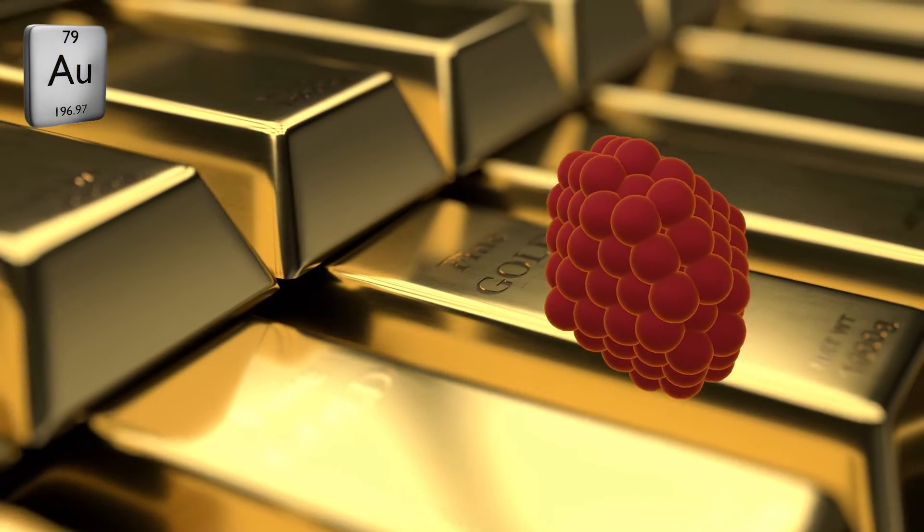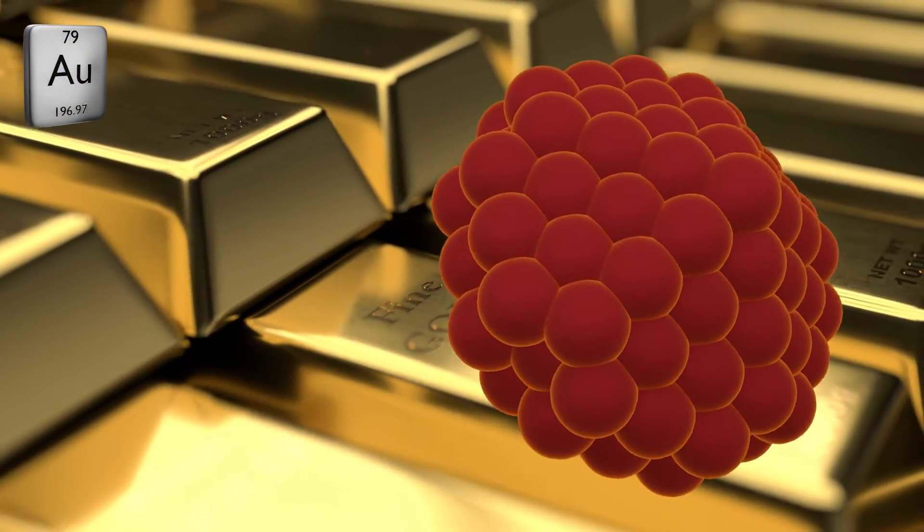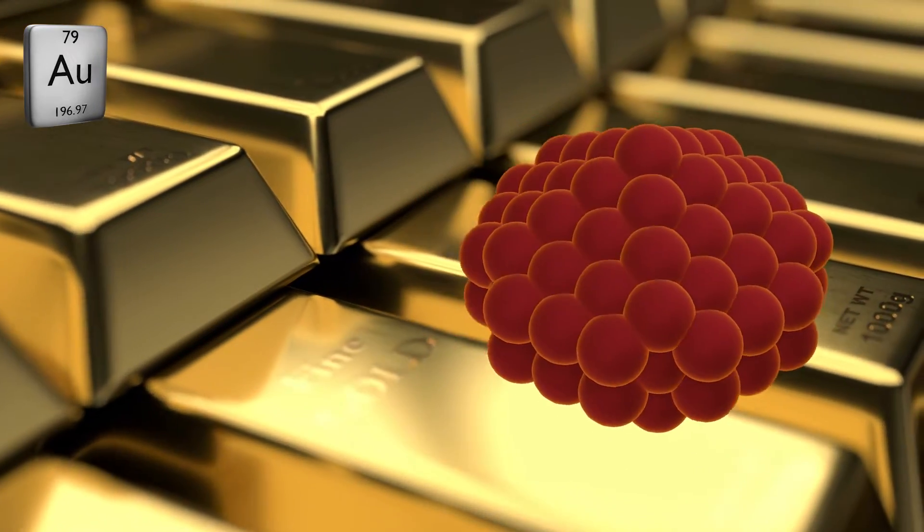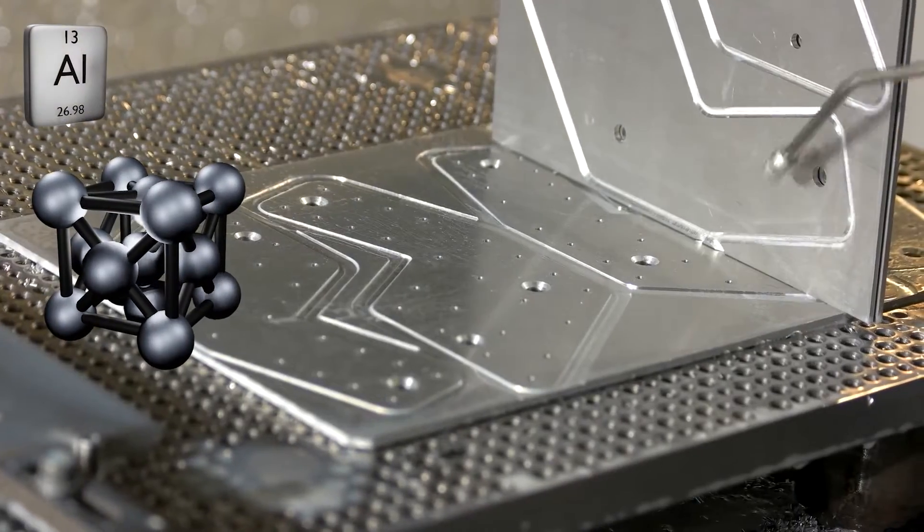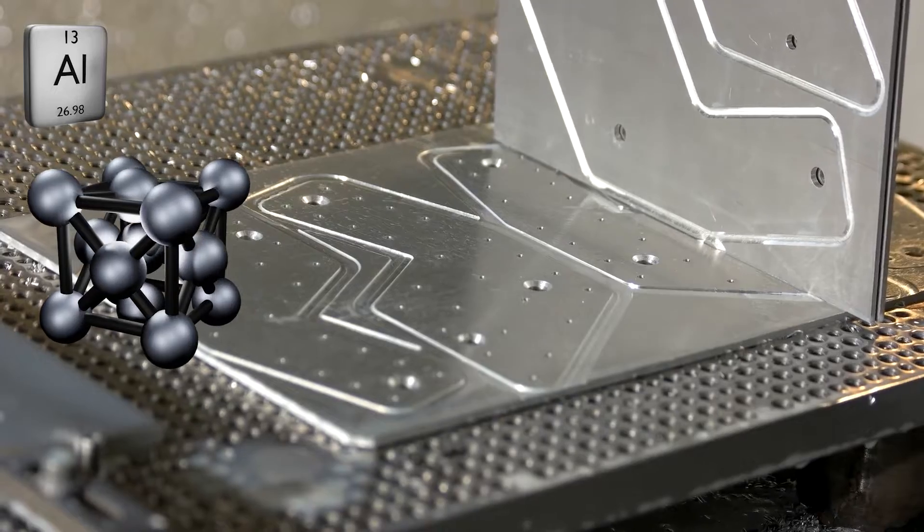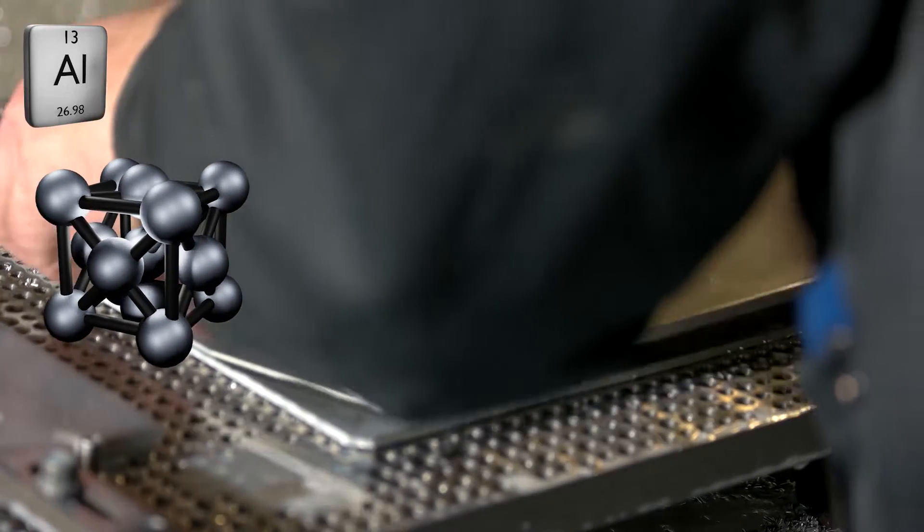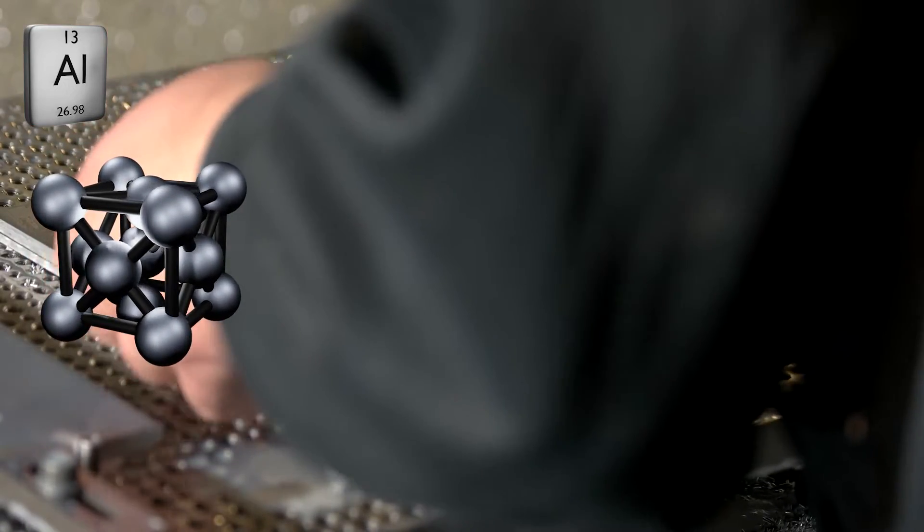For instance, the atoms that make up a gold bar are identical to the atoms that make up a gold nanoparticle. In our everyday lives, we're used to objects having consistent and fixed properties when their chemical compositions are consistent and fixed.